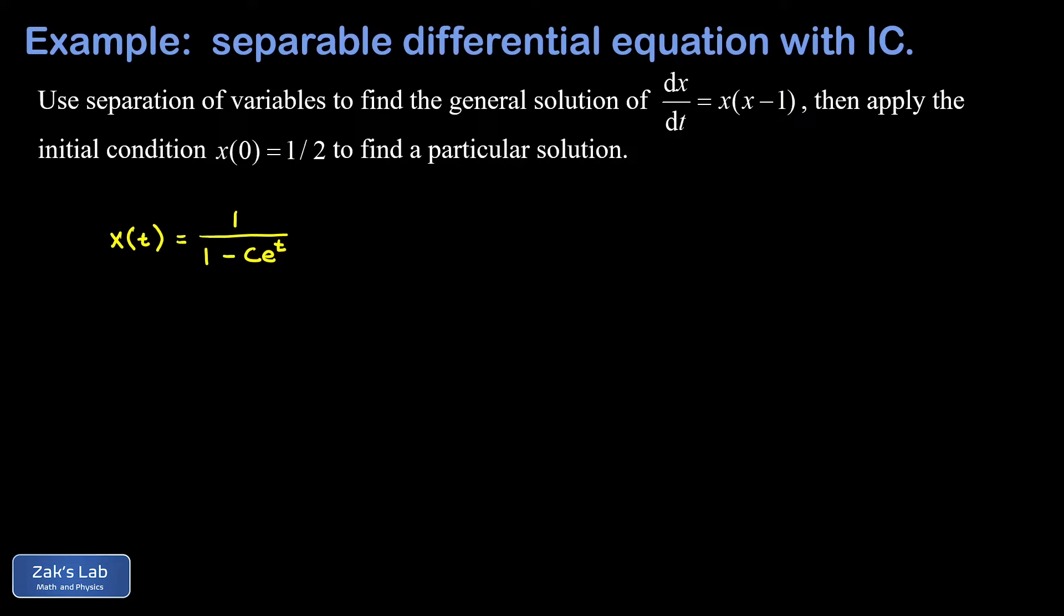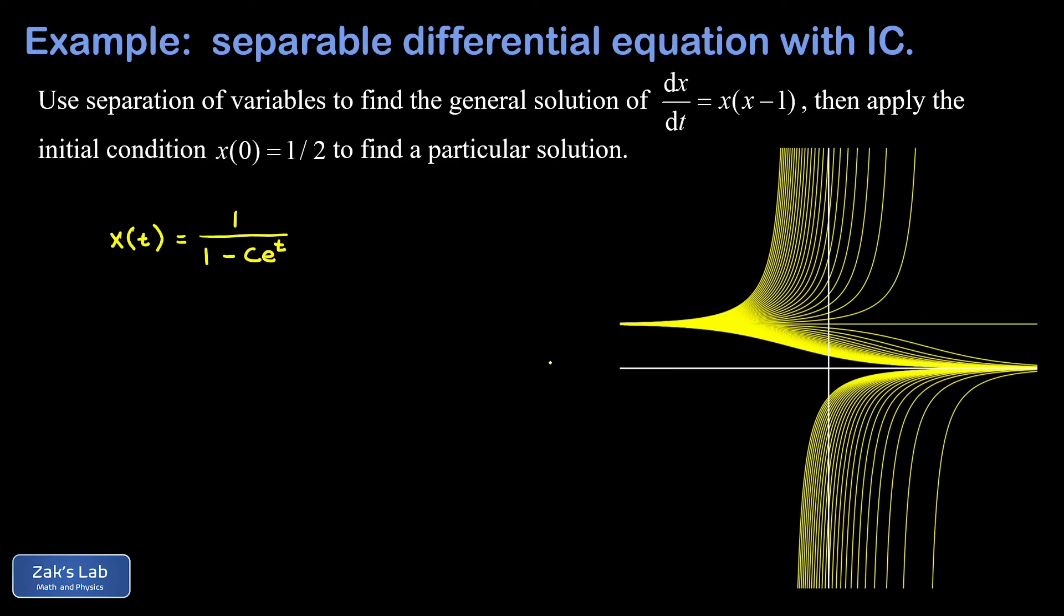And as always, we see one arbitrary constant in that solution. So if we start subbing in a bunch of different values of c, it's going to create a family of curves, this set of infinitely many curves that satisfy the original differential equation. And this is what the family of curves looks like. So that's just a bunch of different c values. I think I put in 50 different c values. And we see all these different functions that satisfy the original differential equation.